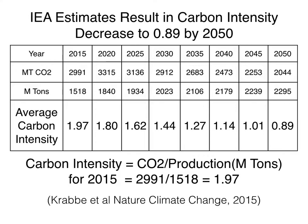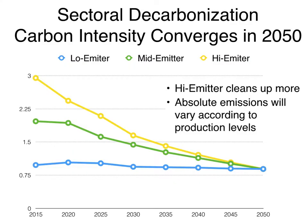The SDA approach has all companies in an industry converging to the same carbon intensity by 2050 — so it's a convergence, not a compression approach. You can see the numbers here going from 1.97 tons of CO2 per ton of steel produced to 0.89. Being a convergence approach, it's cost efficient in that all companies have to make similar reductions that presumably have similar costs. Here's the convergence of carbon intensities for three hypothetical companies: the high emitter cleans up more and the low emitter doesn't need to do much at all.